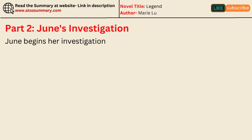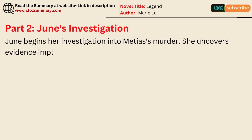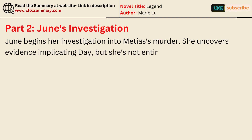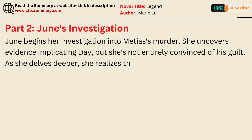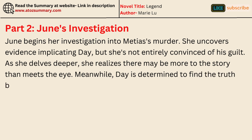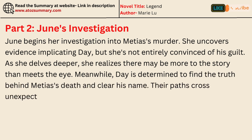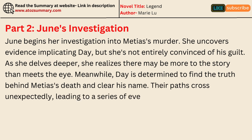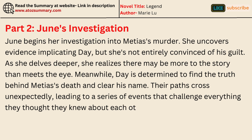June begins her investigation into Matthias' murder. She uncovers evidence implicating Day, but she's not entirely convinced of his guilt. As she delves deeper, she realizes there may be more to the story than meets the eye. Meanwhile, Day is determined to find the truth behind Matthias' death and clear his name. Their paths cross unexpectedly, leading to a series of events that challenge everything they thought they knew about each other and the Republic.